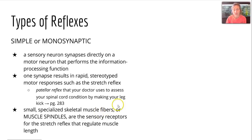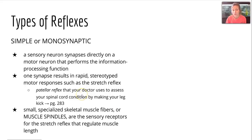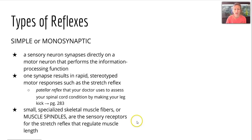There are simple or monosynaptic reflexes, where a sensory neuron synapses directly on a motor neuron that performs the information processing. With one synapse, we get a rapid, more stereotyped motor response, such as the stretch reflex. An example is the patellar reflex your doctor uses to assess spinal cord condition by making your leg kick — there's a picture on page 283. In this reflex, small specialized skeletal muscle fibers called muscle spindles are the sensory receptors, and they regulate muscle length.